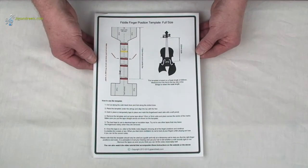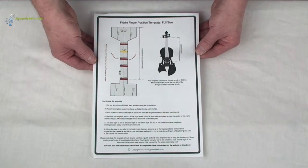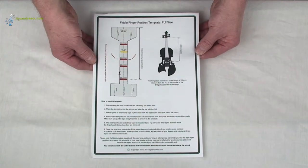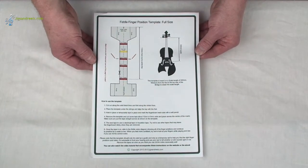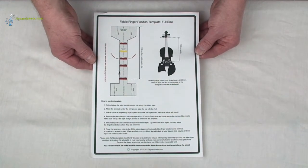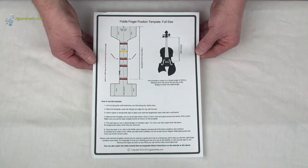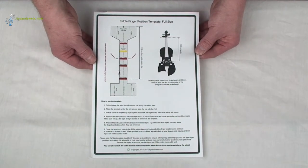This is the tutorial on how to use the finger position templates for the fiddle. They're available in four sizes: full size, three quarter, half size, and quarter size.